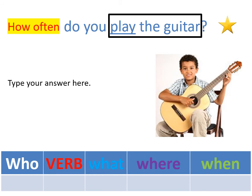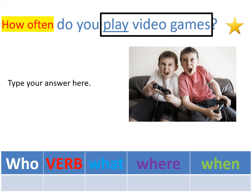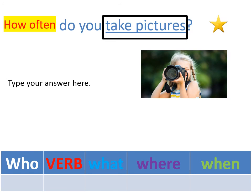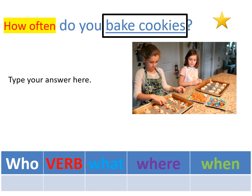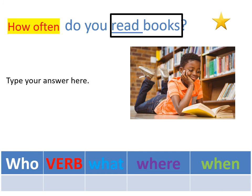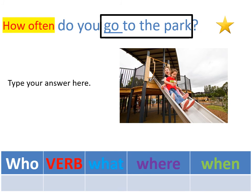Câu hỏi ví dụ: How often do you play the guitar? Động từ được gạch chân là 'play', cho nên hãy nhớ đặt từ chỉ tần suất ở phía trước 'play'. Tương tự các con sẽ làm những câu sau: How often do you play video games? How often do you watch movies? How often do you take pictures? How often do you bake cookies? How often do you draw pictures? How often do you read books? How often do you go to the park?